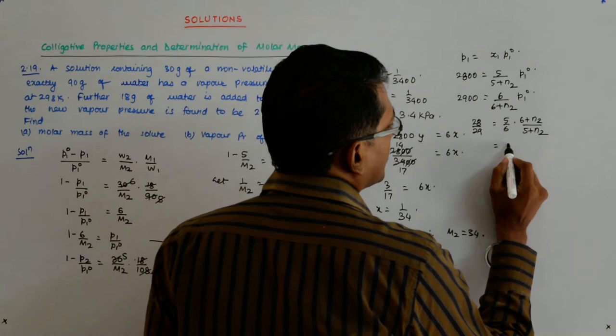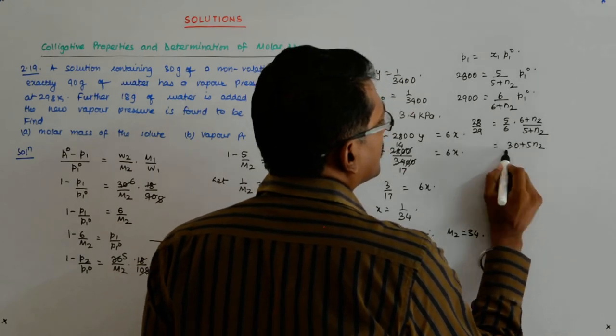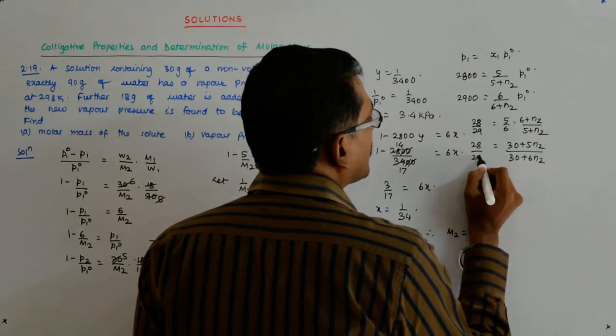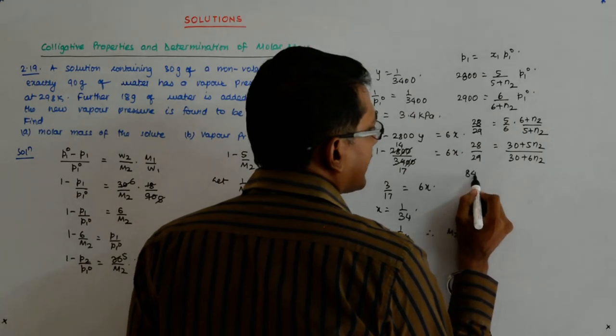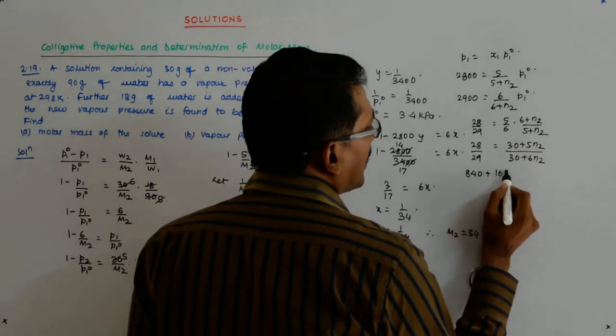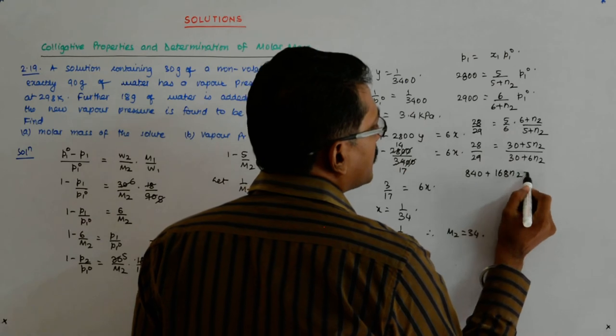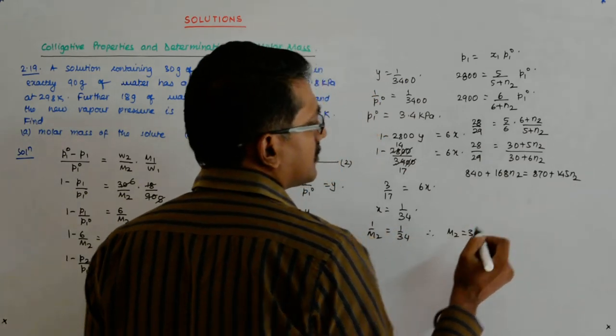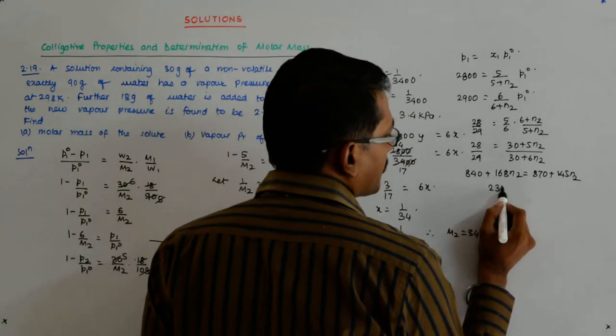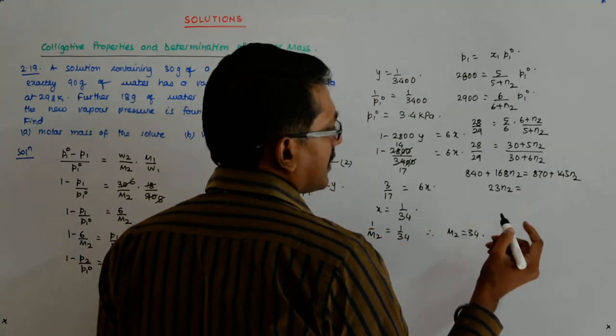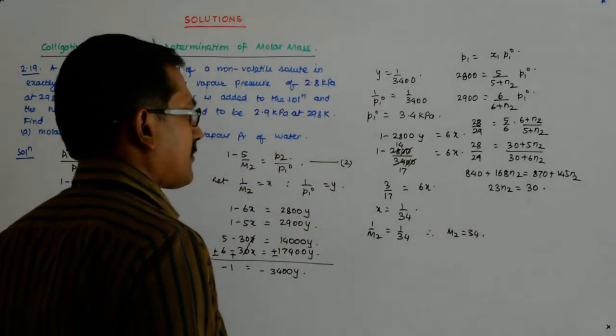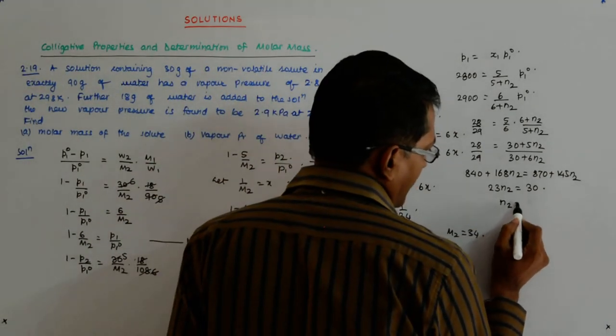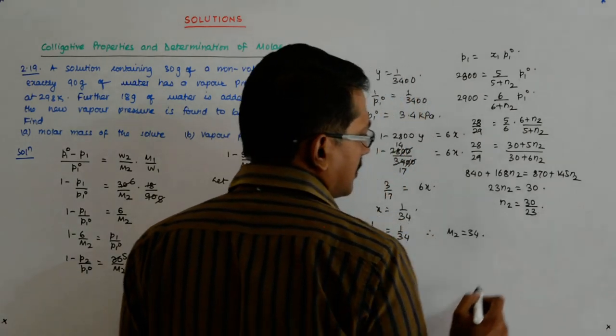This becomes 30 plus 5 into, this is 30 plus 6 into 28 upon 29. You multiply, you get 840 plus 168 n2 is equal to 870 plus 145 n2.